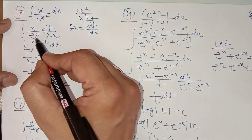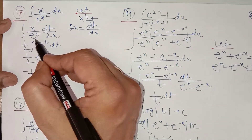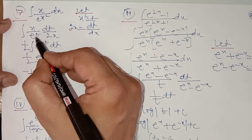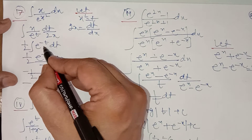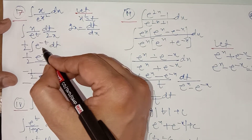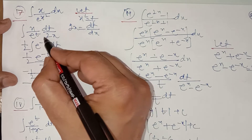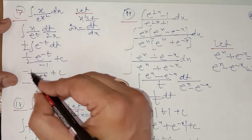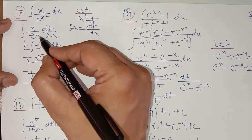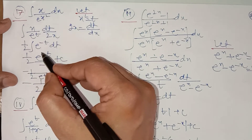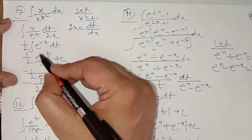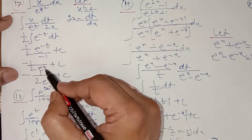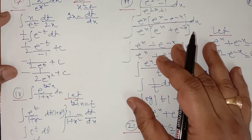So we are getting 1 upon e to the power t. Now you cannot integrate 1 upon e to the power t as it is — be very careful. First of all take e to the power t to the numerator; it will be equal to e to the power minus t. Now integrate: integration of e to the power minus t is e to the power minus t divided by the derivative of minus t, which is minus 1, plus c. Arrange the negative sign, then replace the value of t which is x square.